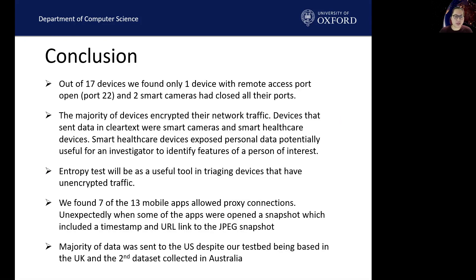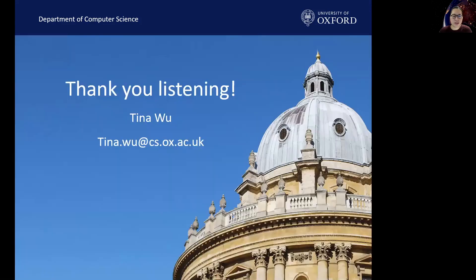In conclusion, out of the 32 devices, we found only one device with remote access, and two smart cameras had closed all their ports. We found the majority of devices encrypted their network traffic. Devices that sent data in clear text were mainly smart cameras and smart healthcare devices, with smart healthcare devices exposing the most personal information useful for investigators to identify features of a person of interest. We found seven of the 13 mobile apps allowed proxy connections, and unexpectedly, some of these apps when opened would take snapshots including a timestamp and URL link to the JPEG snapshot. While the majority of data we found was sent to the US, despite our testbed being based in the UK and a second dataset collected in Australia. Thank you for listening to my presentation.